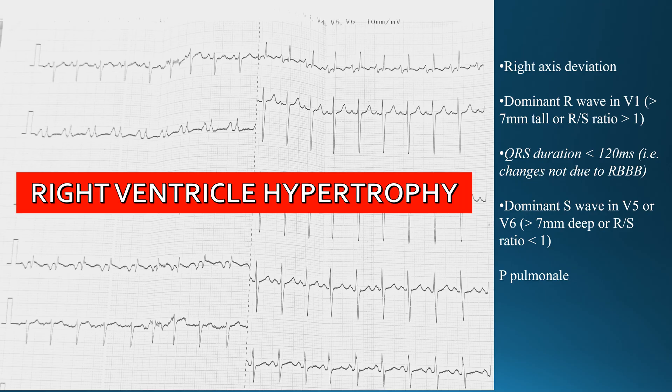Combining all these findings, this ECG depicts right ventricular hypertrophy. This is a diagnosis that is occasionally seen, and we should know its parameters — summarized here — so we can evaluate right-sided heart pathology and any conditions affecting the right ventricle.